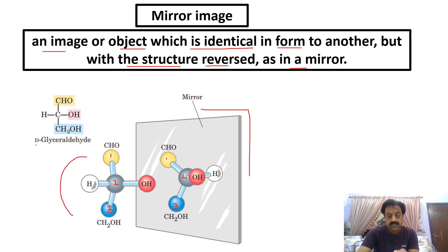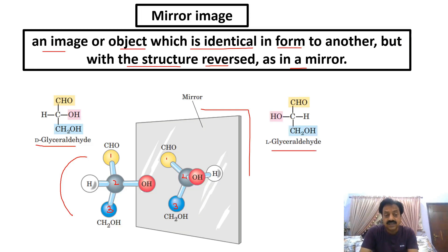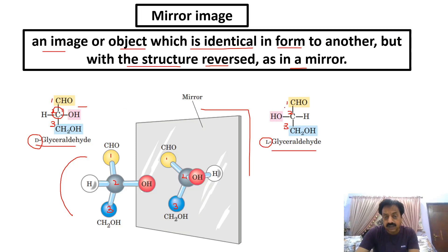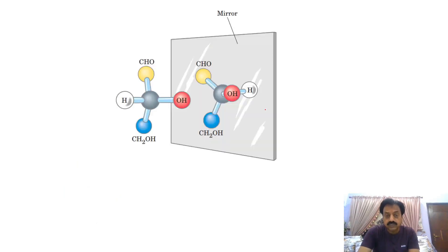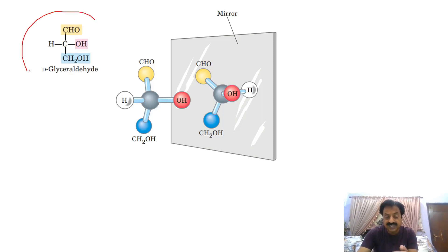The triose placed outside the mirror is called D-glyceraldehyde, and what we see reflected in the mirror is L-glyceraldehyde. Remember, dear students: D stands for dextro, dextro means right side. L stands for levo, and levo means left side. Now look at the central carbon — in the first, second, and third carbons, the OH group is on the right side outside the mirror.